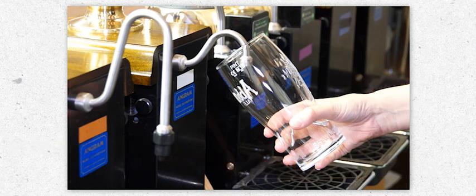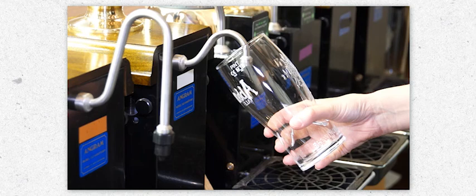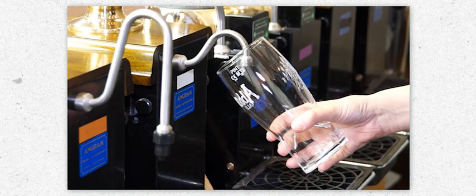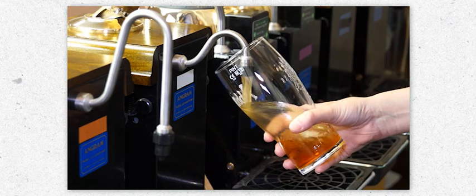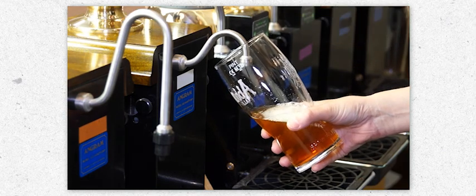Hold the glass at 45 degrees just below the tap. Making sure the glass does not touch the spout, pull the handle firmly and smoothly and allow the beer to flow down the side of the glass.